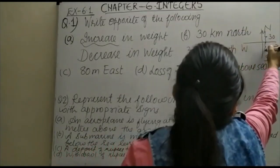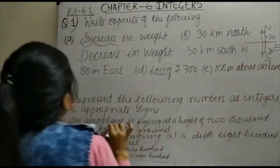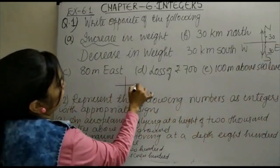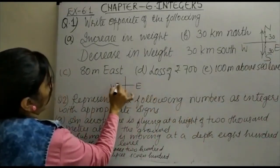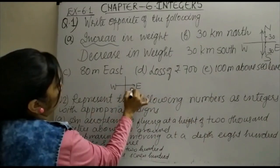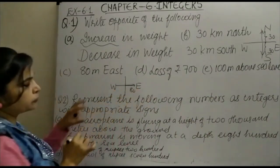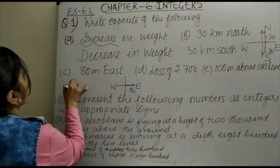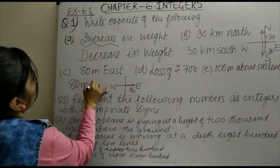Now, 80 meter east. So once again, we can see here, if it is east and this is west, if it is 80 meter towards east, then its opposite will be 80 meter west. So this becomes 80 meter west.